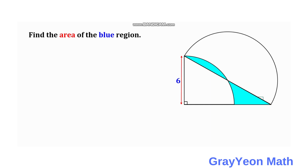First, we need to draw a vertical line from the intersection of the quarter circle and the hypotenuse of the right triangle, and another line from that point to the 90-degree angle of this right triangle. Next, we label this half of the hypotenuse as R, because the hypotenuse is also the radius of this semicircle.